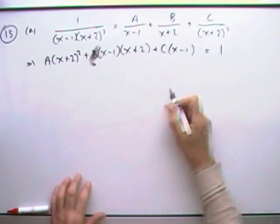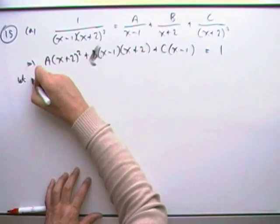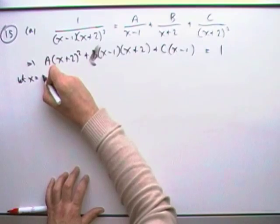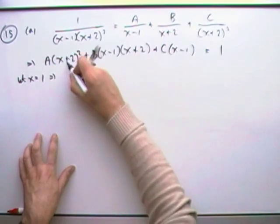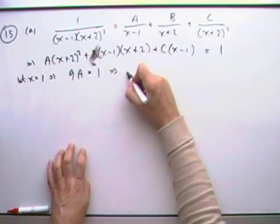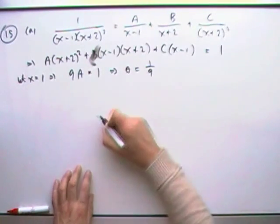And it's just a case of how I want that out. I'll use some knockout values. Let x equal 1. That means you've got 3 squared is 9A equals 1, which means A equals a ninth. Oh, very nice.